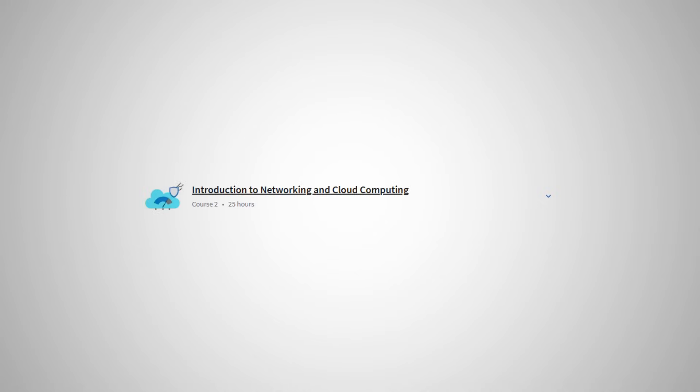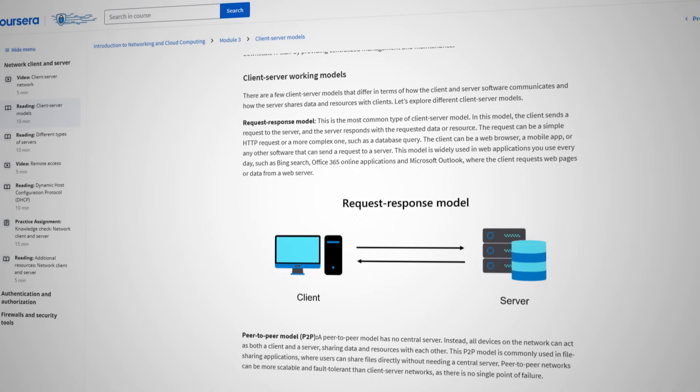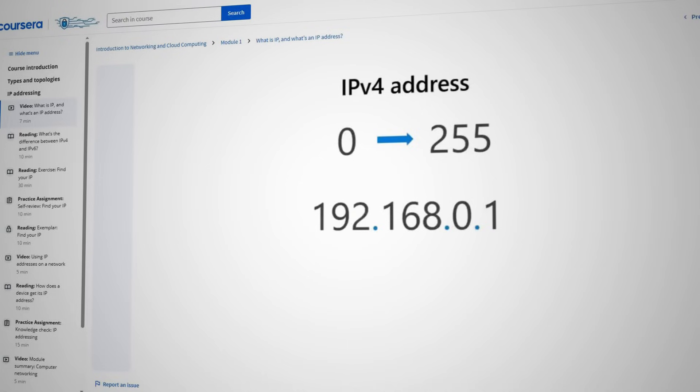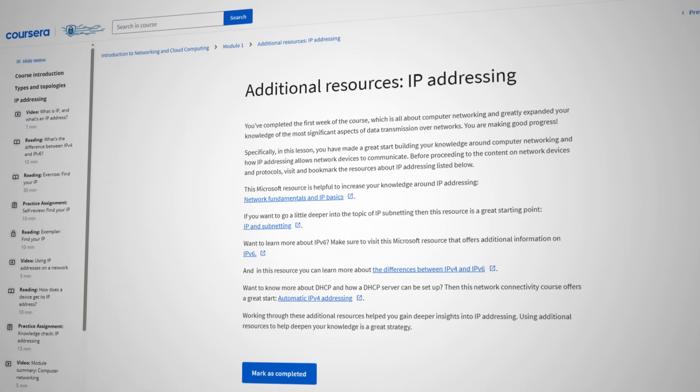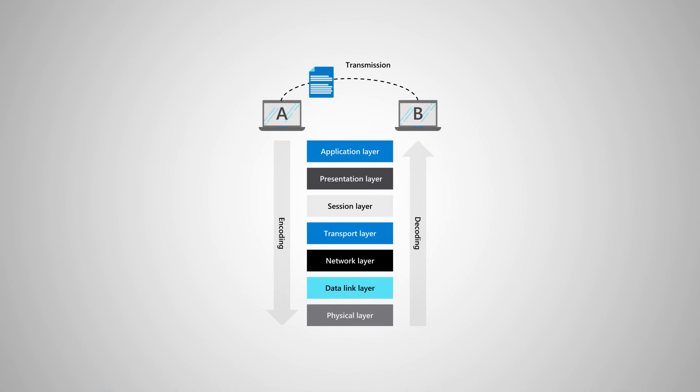The second course is Introduction to Networking and Cloud Computing. I think this course actually does a pretty good job of introducing the fundamentals of networking. This covers things like different network topologies, what an IP address is, what subnetting is, the OSI model, and different protocols — all of those core things about networking that you're going to have to understand before you even get into trying to secure a network.